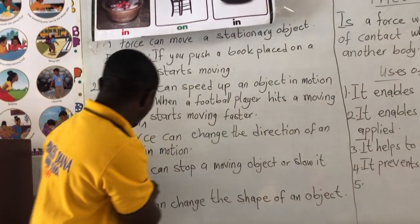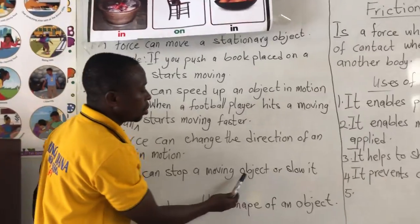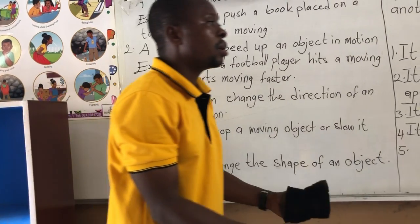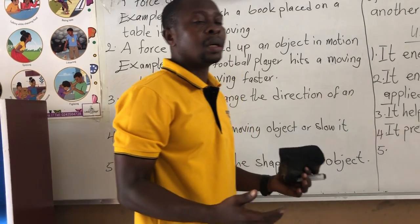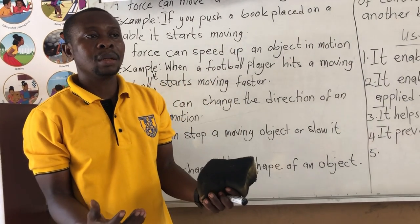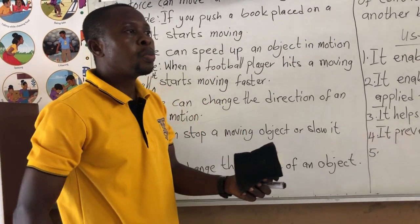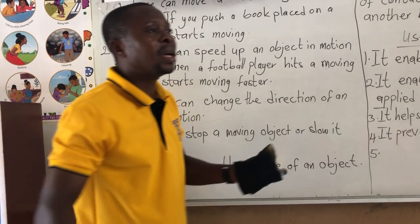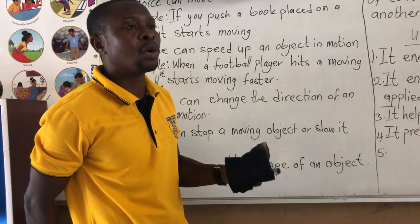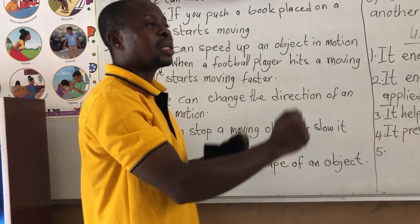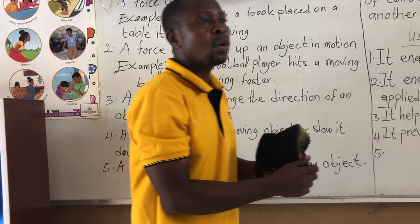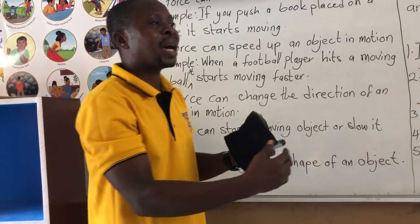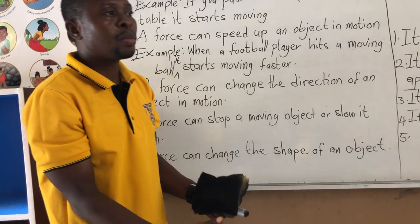A force can stop a moving object or slow it down. Let's say you are riding a bicycle and your friend pulls the bicycle at your back — you are moving at speed, but when your friend pulls the bicycle at your back, you can no longer move forward with speed. Gradually, when more opposing force is applied, you see that you stop.